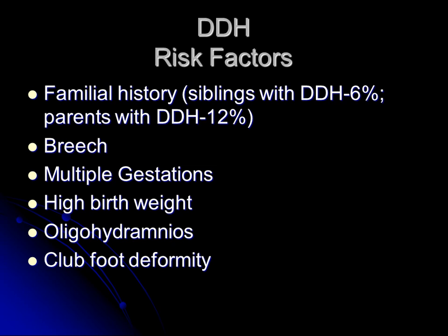Probably the most common risk factor I see is breech presentation at the time of birth. Family history is also important, and anything that limits fetal motion or fetal positioning might result in prolonged abnormal position of the femoral head in relation to the acetabulum in utero. So breech presentation, oligohydramnios, multiple gestations, low birth weight, and a similar club foot deformity are all associated with DDH because they can also result from abnormal fetal positioning.